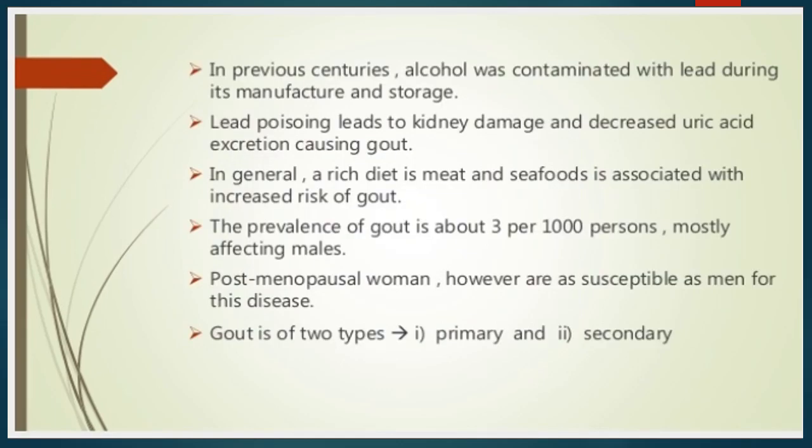In the previous century, lead poisoning led to kidney damage and decreased uric acid excretion, causing gout. A diet rich in meat and seafood is also associated with increased risk of gout. Postmenopausal women, however, are as susceptible as men for this disease. The prevalence of gout is about 3% per 1000, mostly affecting males.